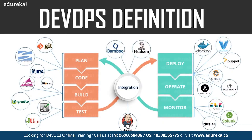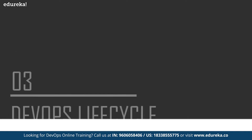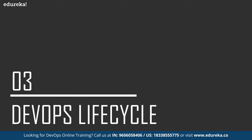The aim of DevOps is to shorten the systems development lifecycle while delivering features, fixes, and updates frequently in close alignment with the business objectives. As you can see in this diagram, these are the various tools that are used in DevOps. And now let us have a look at the DevOps lifecycle.